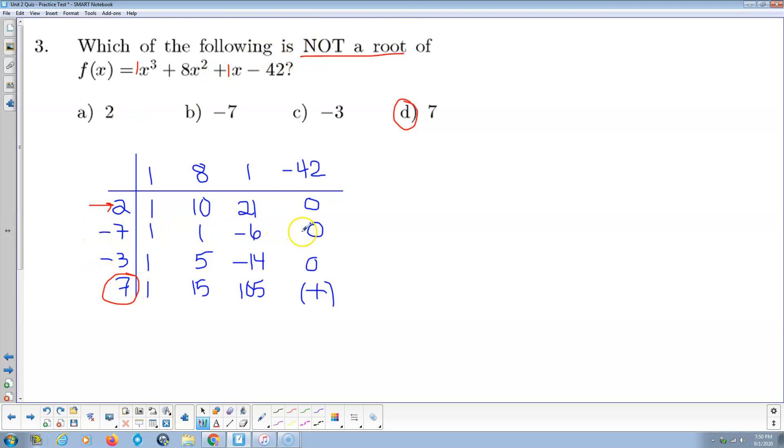So I put negative 7 in, I get 0. So negative 7 is the root. We put negative 3 in, I get 0. Negative 3 is the root. We put 7 in. Notice we get 105 here. 7 times 105 is like 735 minus 42. That's like 600 and something. It's a huge positive number. It's not 0, not a root. There's my answer, D. 7 is the only one that's not a root.